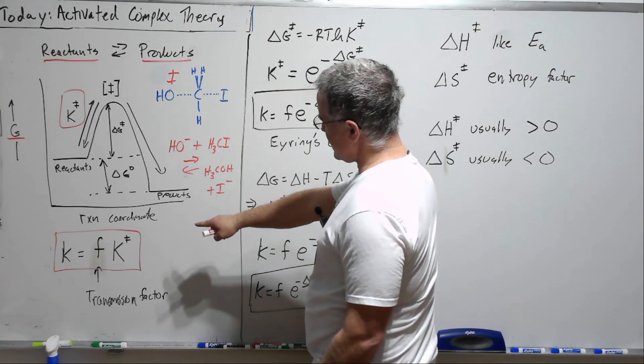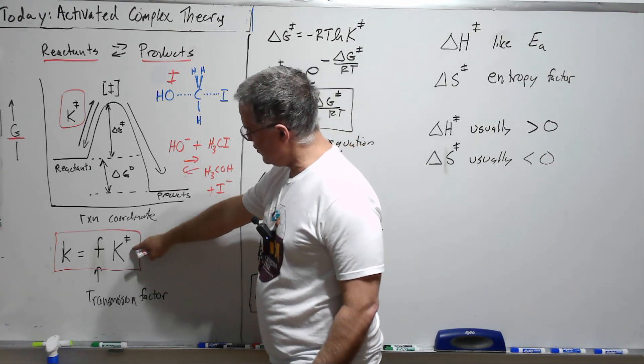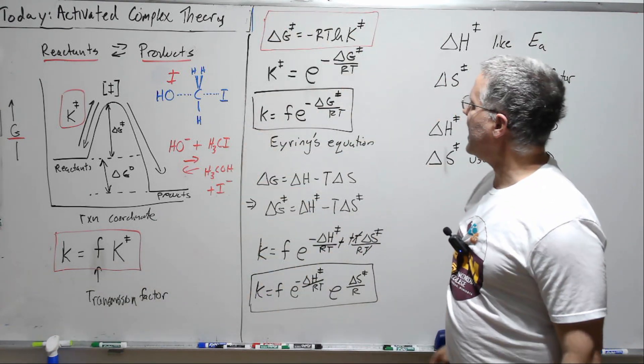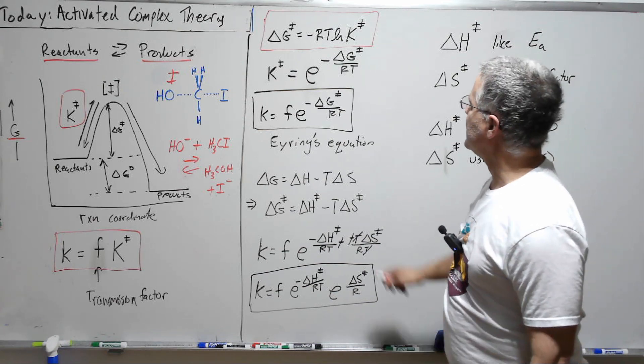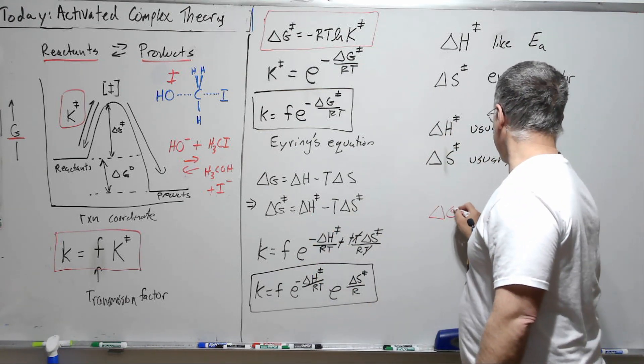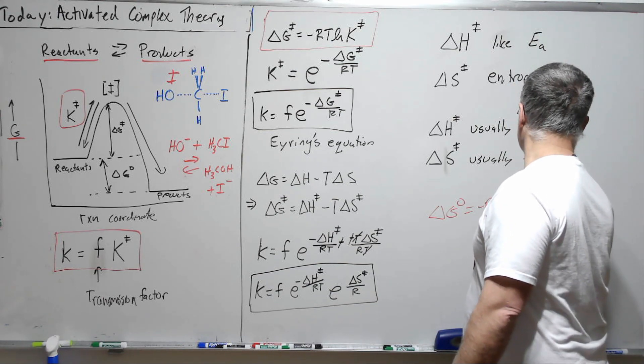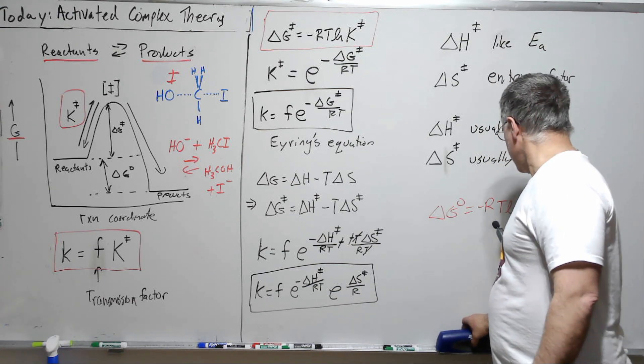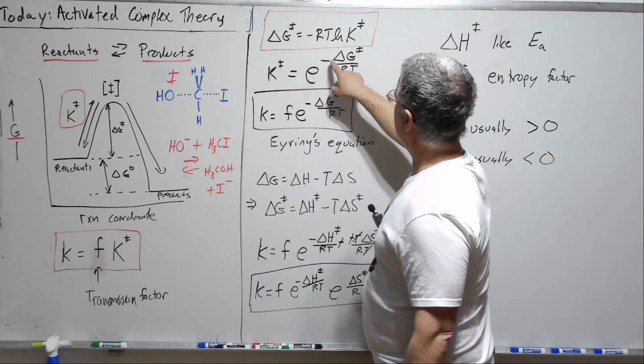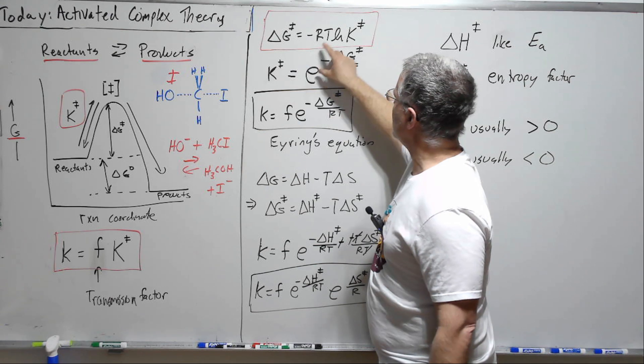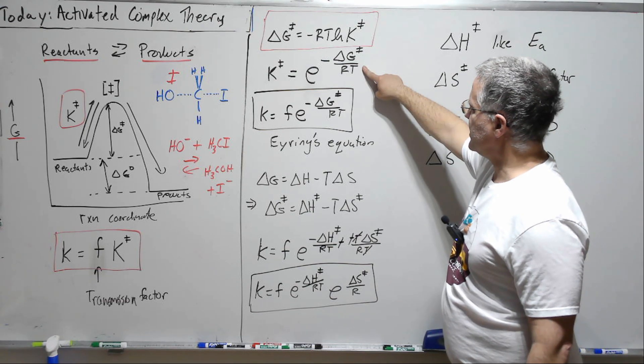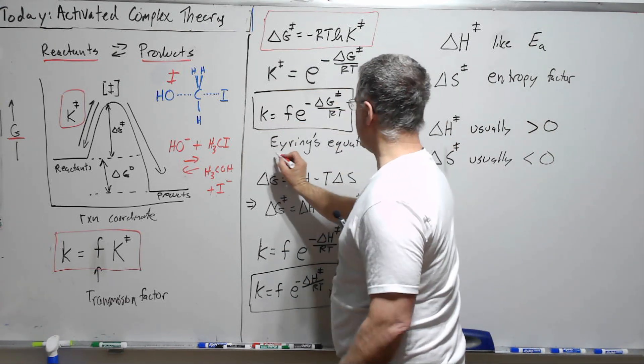Okay, well let's now use this as an equilibrium constant. So we can write a delta G equation for that as delta G double dagger equals minus RT ln K. So this would be just like writing this is the analog of writing this. Well let's solve for K double dagger. So we're going to bring RT minus RT over here and then exponentiate. So we have K double dagger is e to the minus G double dagger over RT. So K is F times this and that's Eyring's equation.